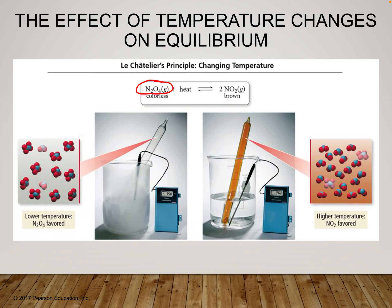In the lab, we have dinitrogen tetroxide in a glass tube kept in the freezer — at low temperatures, N2O4 is favored, so the gas tube is colorless. If we decrease heat, it shifts toward the reactant side. But if we take it out and let it warm up, the added heat shifts the equilibrium to the right, producing nitrogen dioxide, and the gas tube turns brown. We actually produce nitrogen dioxide in Chem 1 during the copper reaction lab — when nitric acid is added, it produces that brown NO2 gas.